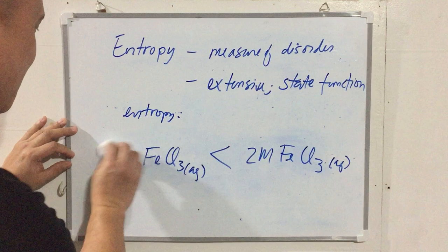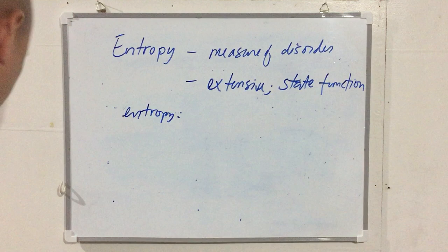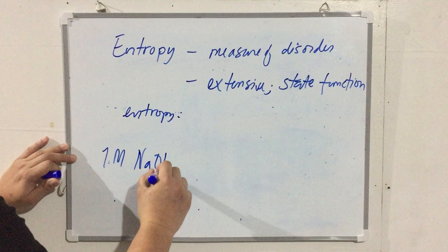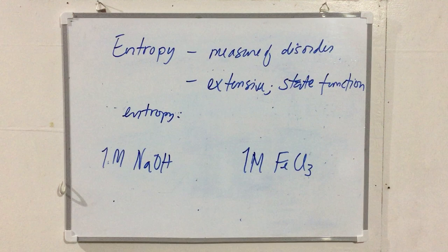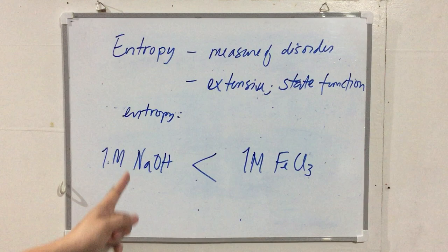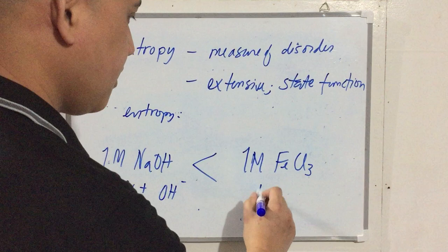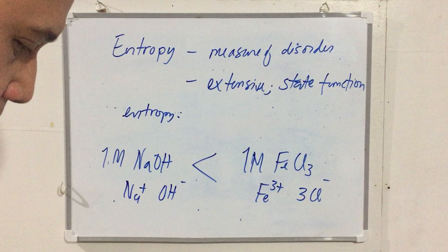Comparing one molar sodium hydroxide solution versus one molar ferric chloride solution: the ferric chloride has higher entropy. When NaOH dissociates into ions, it only produces two: Na⁺ and OH⁻. But FeCl₃ produces Fe³⁺ and 3 Cl⁻, so more ions are produced. More ions in solution means higher entropy.